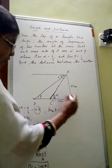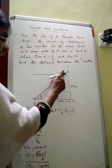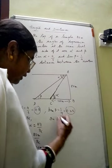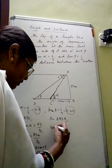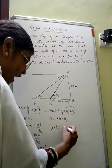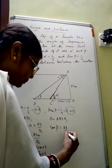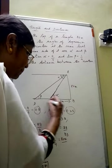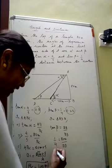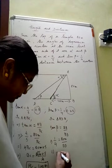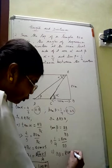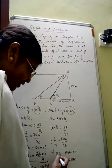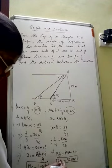Now let us concentrate on the other triangle ADB. In triangle ADB, we have tan beta equal to the opposite side AB divided by the adjacent side BD. Tan beta was 1 by 4, so 1/4 = 80/BD. Cross-multiplying gives BD = 80 × 4 = 320 meters. So the length of BD is 320 meters.